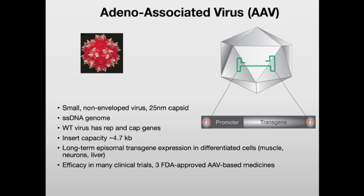There are different forms of AAV, including self-complementary AAV, which has a smaller packaging capacity. AAV has been shown in several preclinical studies to mediate long-term episomal transgene expression, mainly in differentiated cells such as muscle, neurons, and liver. In rapidly dividing cells, because of the extra-chromosomal nature of the AAV genome, it can be diluted out and you can lose expression over time. For certain applications such as genome editing, where you only need a short burst of Cas9 expression to mediate permanent genome modifications, AAV may still be used. AAV has been efficacious in many clinical trials, and there are currently three FDA-approved AAV-based medicines.